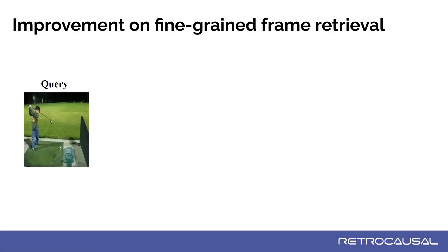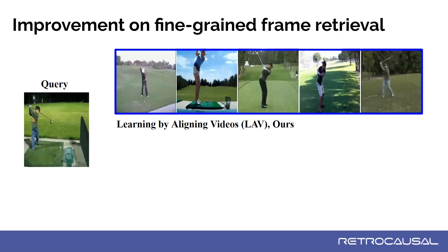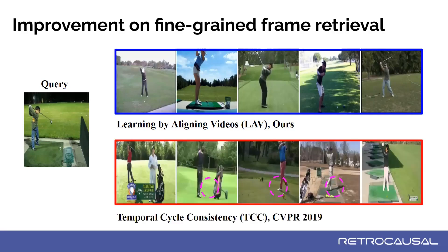We also show that LAV is able to discriminate more fine-grained cues than previous methods such as TCC. Given a query image of the stick-swung-back phase of a golf swing action, we retrieve the five closest frames in the embedding space. LAV retrieves all frames from the same phase of the action. However, TCC retrieves some very similar-looking images from the end of the golf swing action — as highlighted by the pink circles, the golf ball is missing in these frames, implying they are from the end of the action.